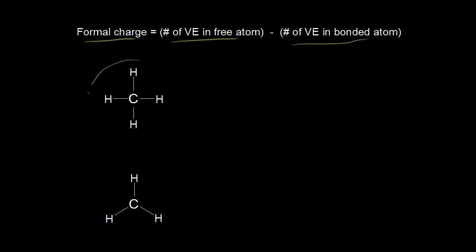So let's assign a formal charge to carbon in the methane molecule. Remember that each bond consists of two electrons, so I'm going to draw in these electrons in the bonds because it's going to make it easier for us to assign a formal charge to carbon. To find the formal charge for carbon, it equals the number of valence electrons in the free atom, which we know is four.